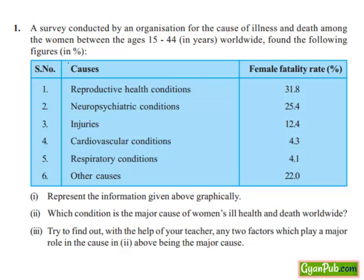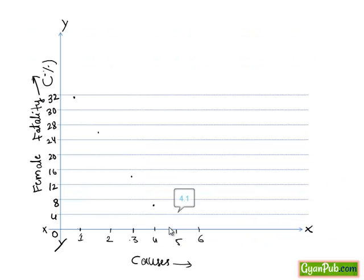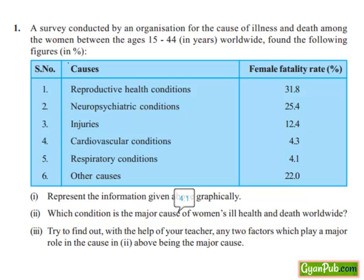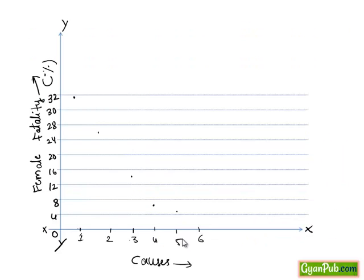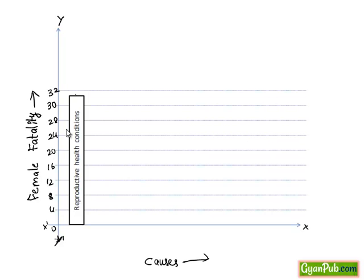Respiratory conditions at 4.1% we get here. Other causes at 22% we can locate the point in between 20 and 24. Now if we draw the bar diagrams for these points — for reproductive health conditions as a sample — we get as follows, which is 31.8%, near to 32.